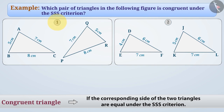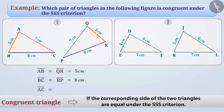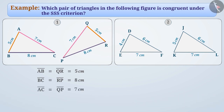Consider the first pair of triangles, i.e. triangle ABC and triangle QRP. AB is equal to QR is equal to 5 cm, BC is equal to RP is equal to 8 cm, and AC is equal to QP is equal to 7 cm. Since all three sides of triangle ABC are equal to the corresponding sides of triangle QRP, hence triangle ABC is congruent to triangle QRP.